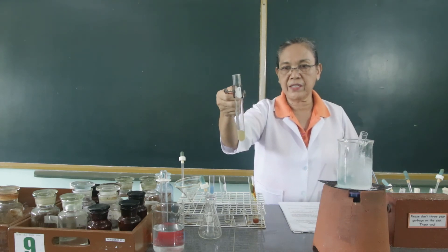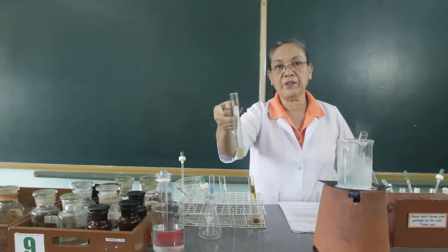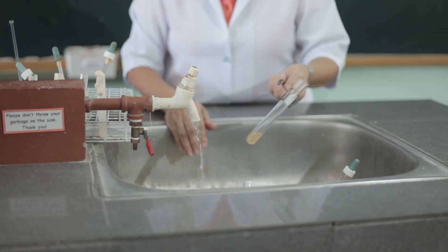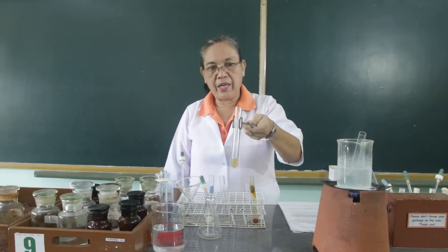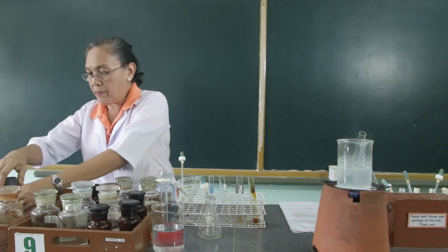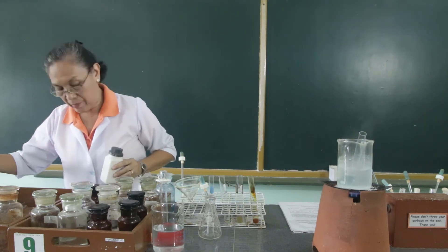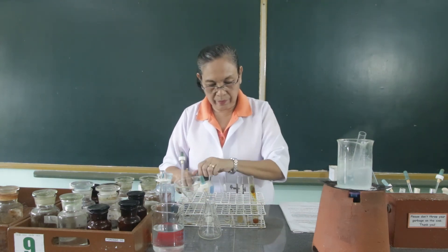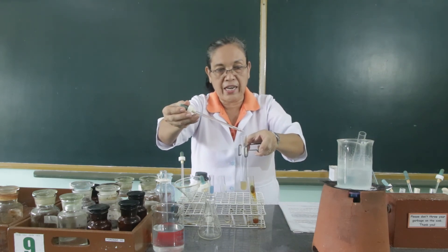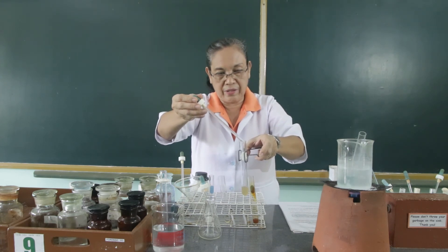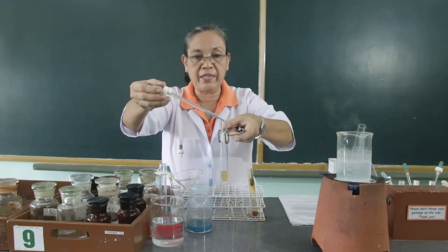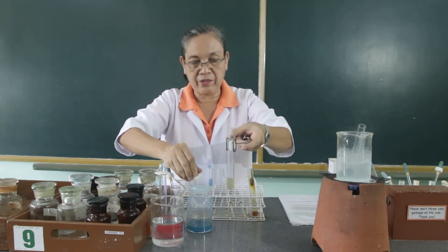After boiling for 10 minutes, we are going to cool this down and add it with sodium hydroxide. The purpose of adding sodium hydroxide is to neutralize the solution. Then we add it with Fehling's reagent so that it will be submitted to Fehling's test.